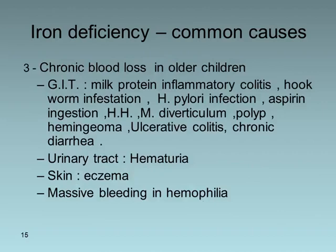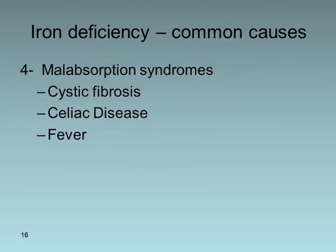The third cause is chronic blood loss, usually seen in children older than two years. GI tract losses may result from milk protein allergy, inflammatory colitis, hookworm infestation, H. pylori infection, aspirin ingestion, hiatus hernia, Meckel's diverticulum, polyps, hemangioma, ulcerative colitis, or chronic diarrhea. Blood loss may also occur via the urinary tract (chronic or recurrent hematuria), skin (eczema), or massive blood loss in hemophiliacs. The fourth cause is malabsorption syndromes, mainly celiac disease, cystic fibrosis, and fever.